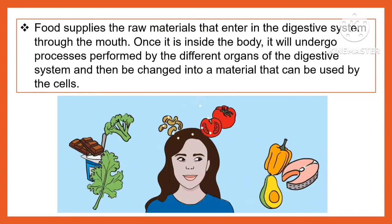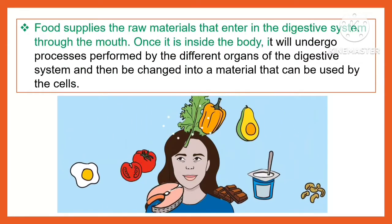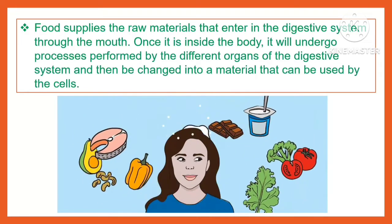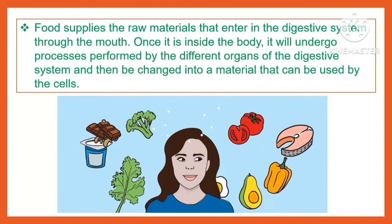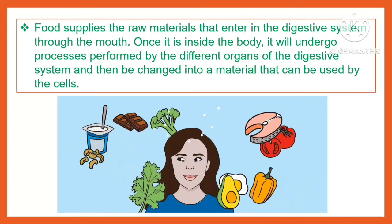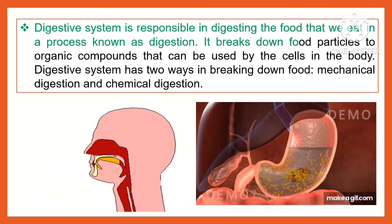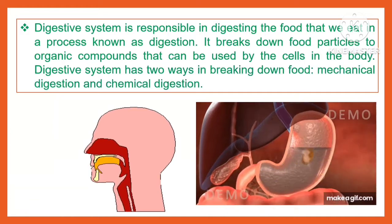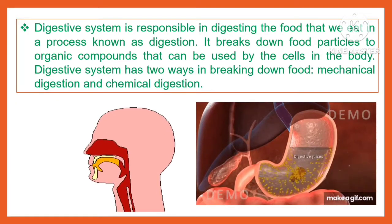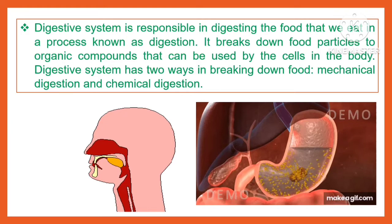Food supplies the raw materials that enter the digestive system through the mouth. Once it is inside the body, it will undergo processes performed by the different organs of the digestive system and then be changed into a material that can be used by the cell. The digestive system is responsible in digesting the food that we eat in the process known as digestion. It breaks down food particles to organic compounds that can be used by the cells in the body. The digestive system has two ways in breaking down food: mechanical digestion and chemical digestion.